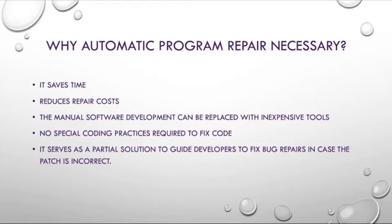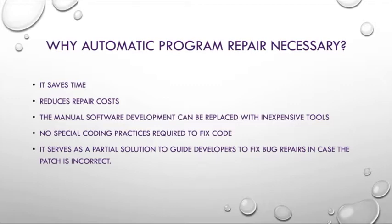Let me go into the details of why automatic program repair is necessary. It saves time and reduces the amount of time engineers spend on debugging. We can fix programs containing millions of lines of code even without any special coding practices required. Sometimes if the patch is incorrect and the bug was not fixed, a partial solution is provided as a guide for developers. Previous work has shown that developers address bug reports associated with a candidate patch more quickly than when no suggested patch accompanies the bug report.